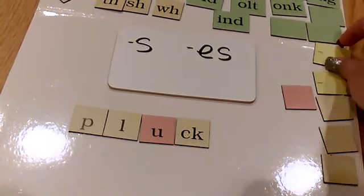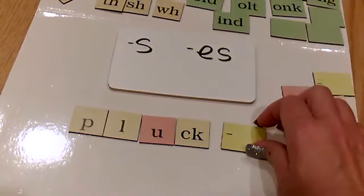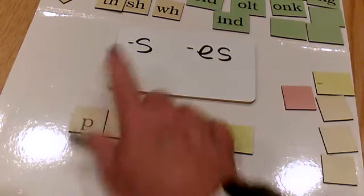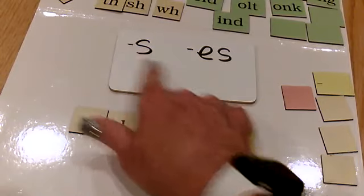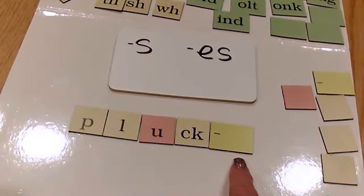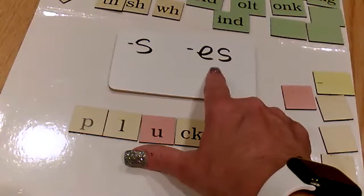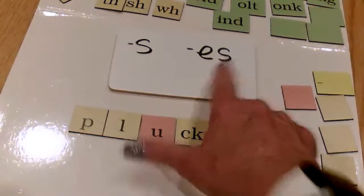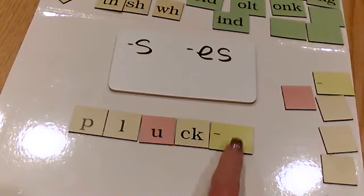But what if I want to add a suffix? Would it be plucks or pluckus? It would be plucks. We only add -es when it's certain ending sounds. ck ain't one of them, so it's just going to be an -s.